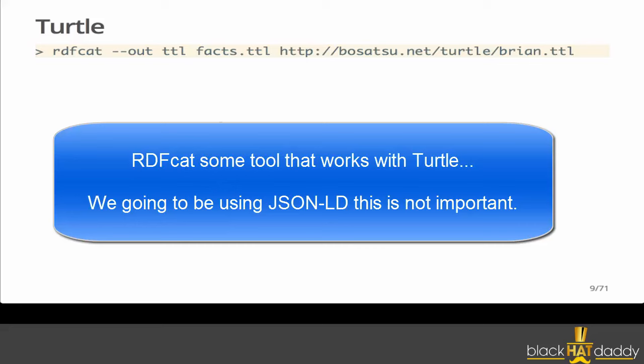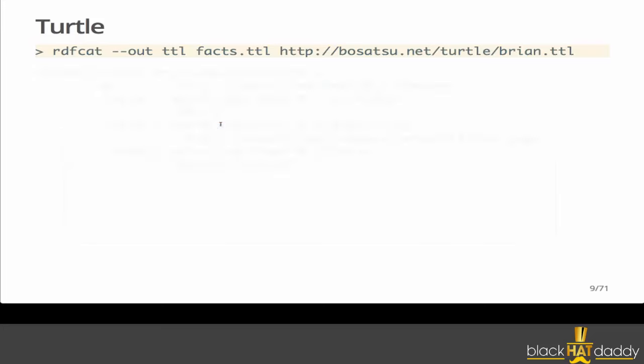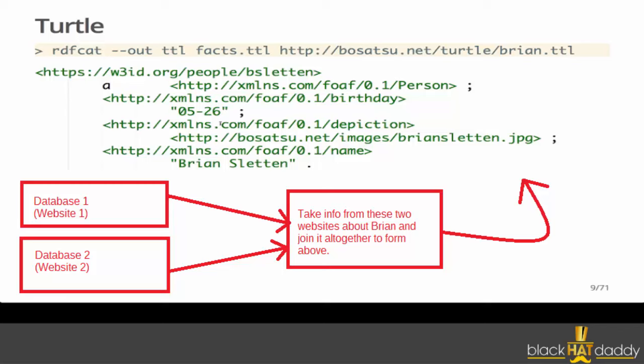With those three triples in the local Turtle file and the extra fact available on the web, I can use a standard tool — in this case rdf:cat, a command line tool from the Apache Jena project — to grab the information in the local file, grab the information in the remote file, merge them together locally into a model, and output it as Turtle. Now I've accumulated an extra fact about myself — that I have a depiction — because I use the same identifier. You don't have to agree on the same names for everything; it's nice when you do, but it's not required.